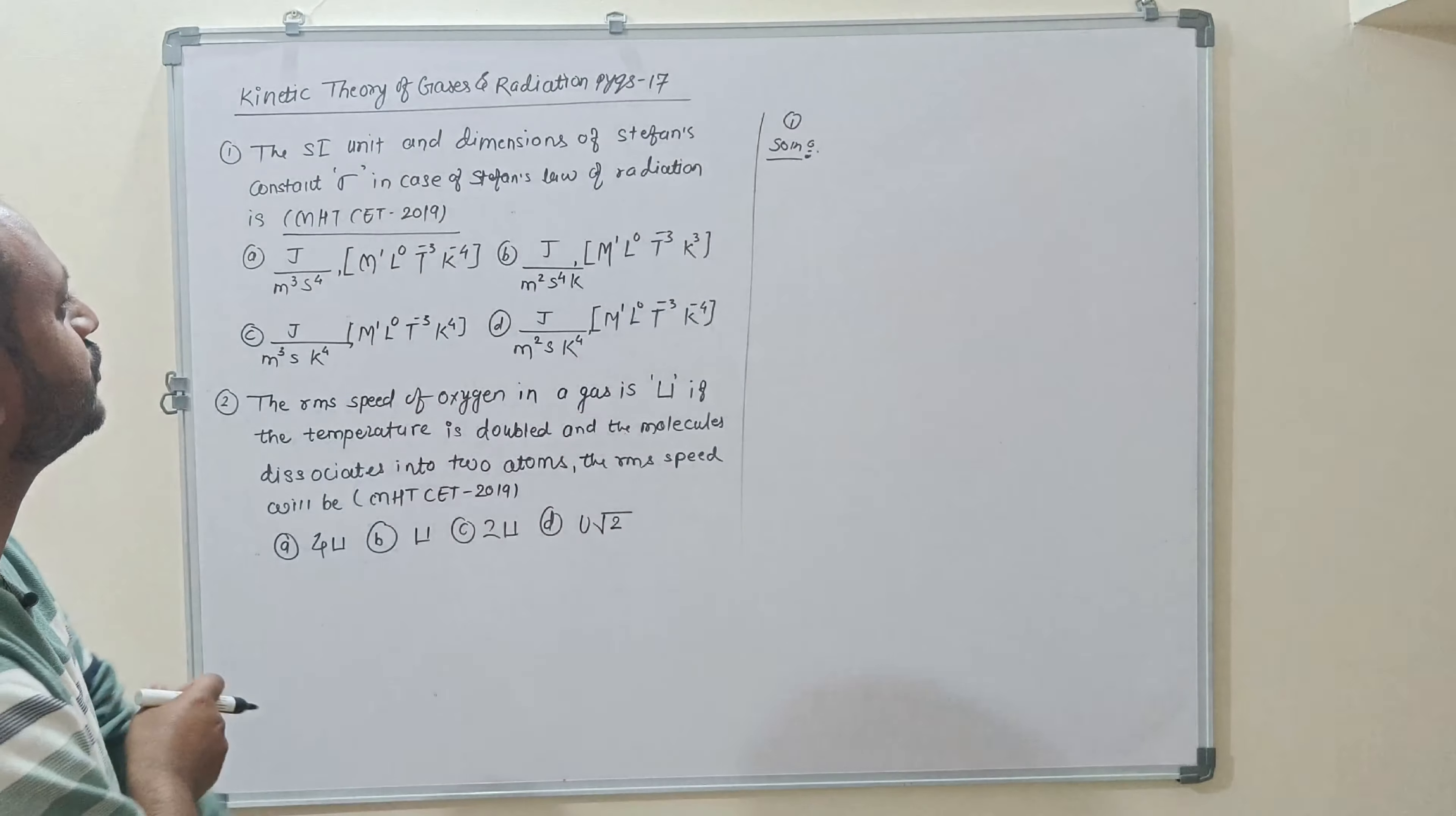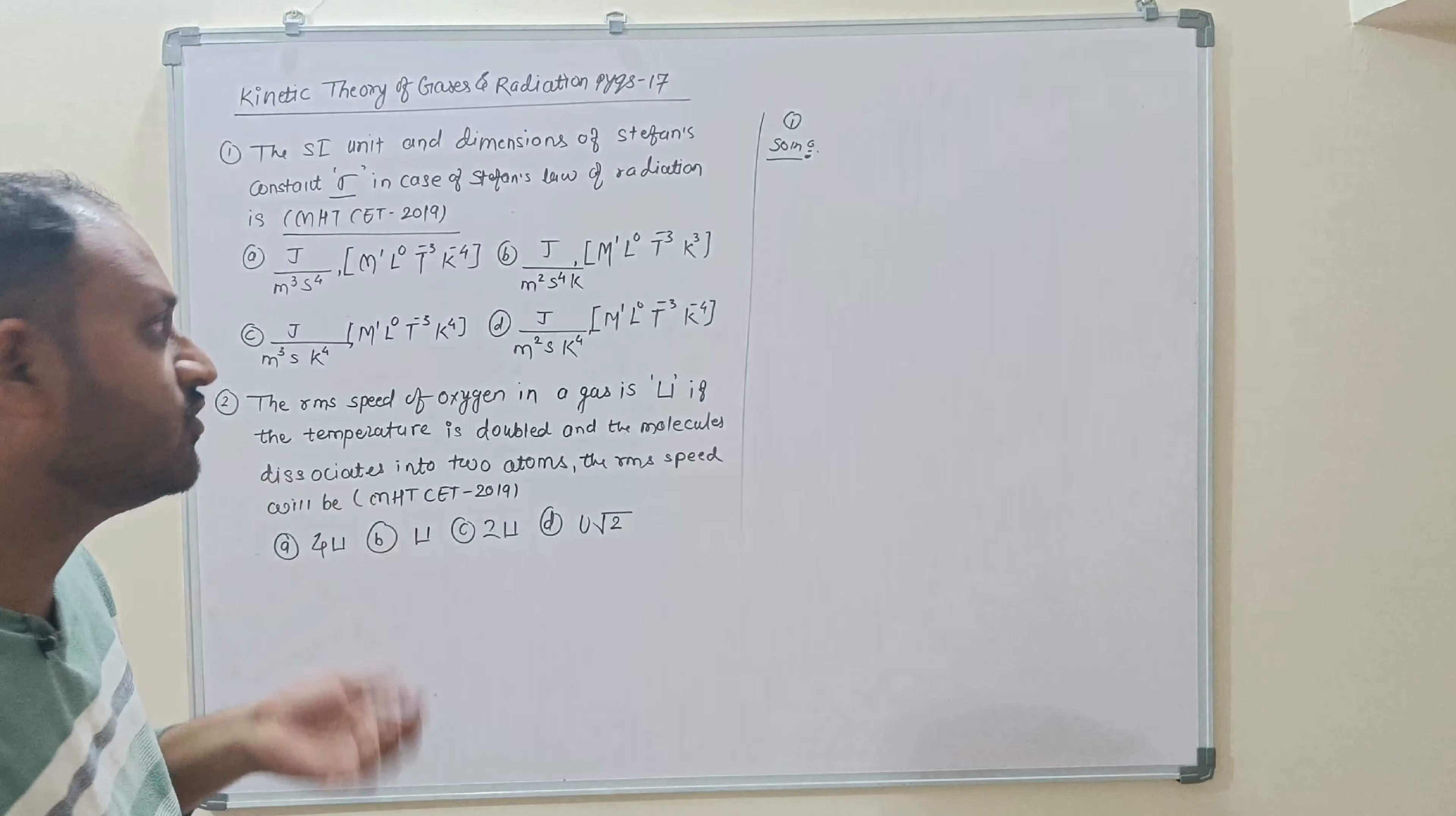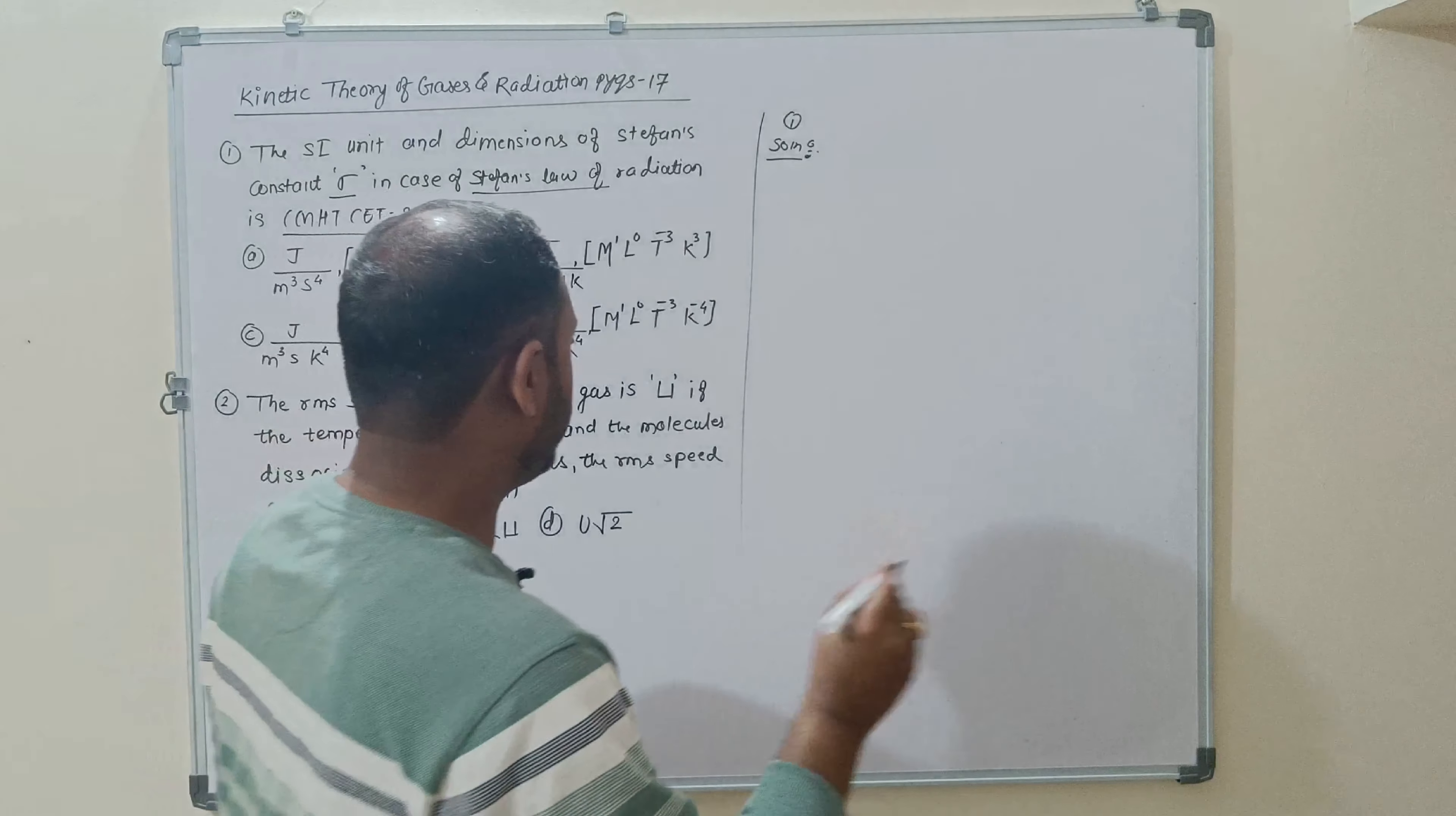The SI unit and the dimension of Stefan's constant sigma in case of Stefan's law of radiation is? This is simple. Stefan's constant was introduced in Stefan's law of radiation.